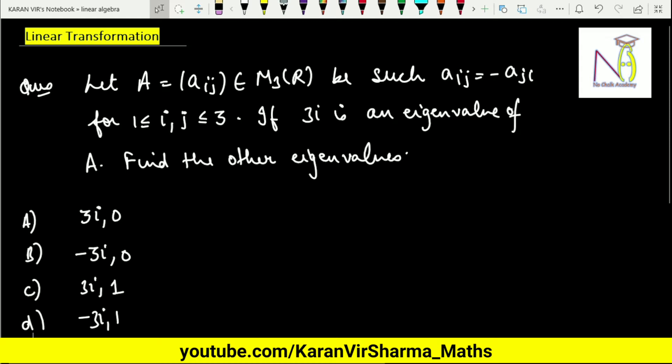In this video lecture we discuss our next question in linear algebra. The question is: let A be a matrix of order 3 by 3 with real entries such that aij equals minus aji for i,j running from 1 to 3. If 3i is an eigenvalue of A, then what are the other eigenvalues?